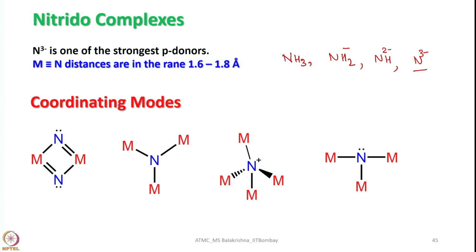In fact, nitride is a six-electron donor and is one of the strongest π-donors known. If you look into M≡N distances, they are in the range of 1.6 to 1.8 Angstrom units. The coordination modes I have shown here: it can bridge two metal centers, or it can also bridge three metals (μ₃). It can also bridge four metal centers, and there are examples where these four metals are arranged in a tetrahedral arrangement.